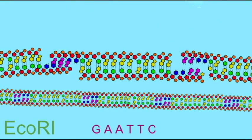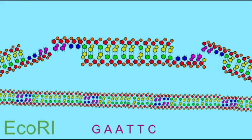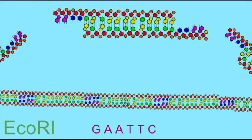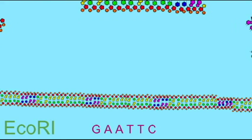If however there were two sequences of G-A-A-T-T-C, then the enzyme EcoR1 will make two cuts.